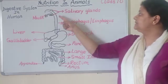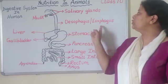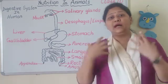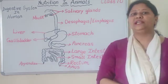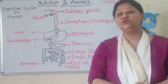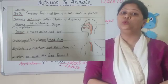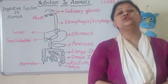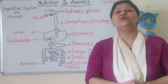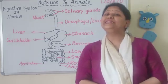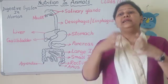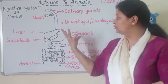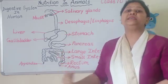Now coming to the food pipe, jis ko hum oesophagus — or esophagus — bhi kehte hain. Both are correct — ek American English hai, doosra British English hai, so don't get confused. What is the use of esophagus? There is a movement called peristalsis — that is rhythmic contraction and relaxation — aise aise karke ye food ko forward ke taraf bhejta hai.